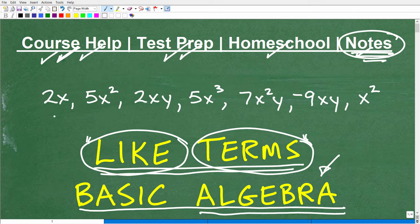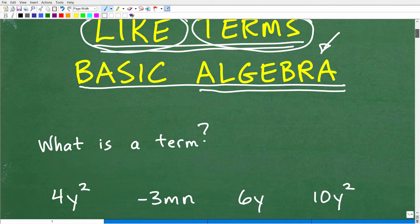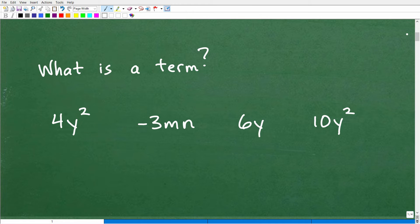All right, so let's get into like terms. And here we have what we call terms. So these are some examples of some terms in algebra. But let's go ahead and more specifically define terms. We can't really talk about what like terms are until we know what a term is. So in algebra, we use this word term to describe things like this. These are some examples of some terms. Now, what are some of the parts, the components of a term? Let's take a look at this first one here. So we have a number, like four in front of some variable part right here.